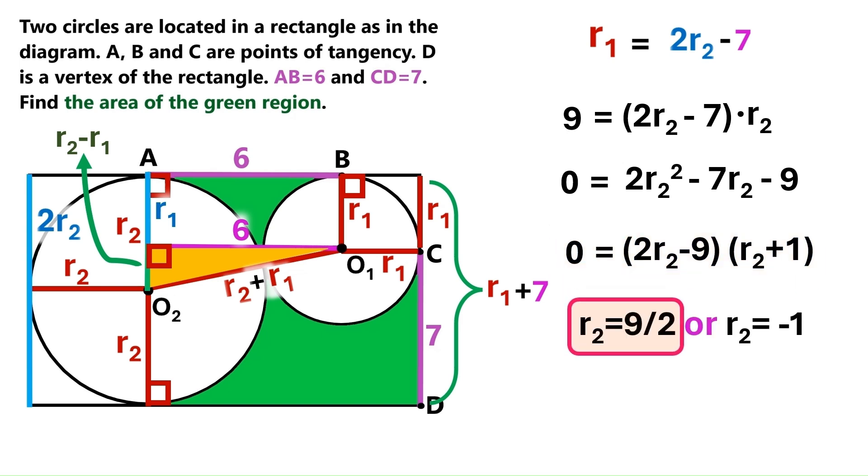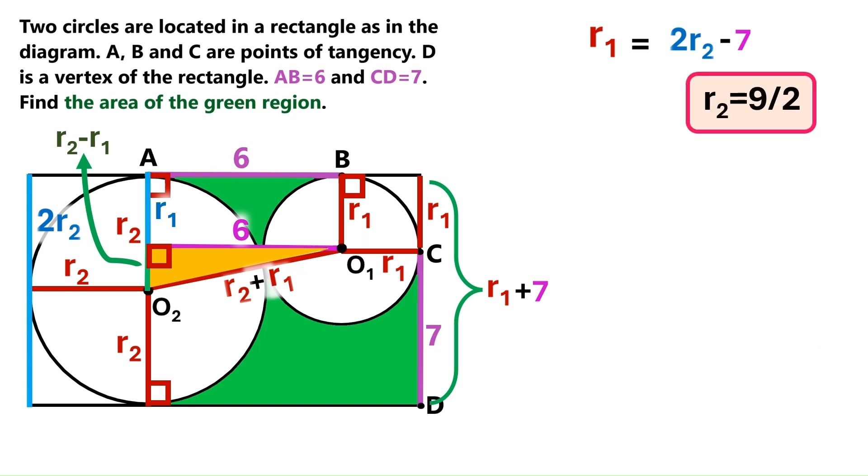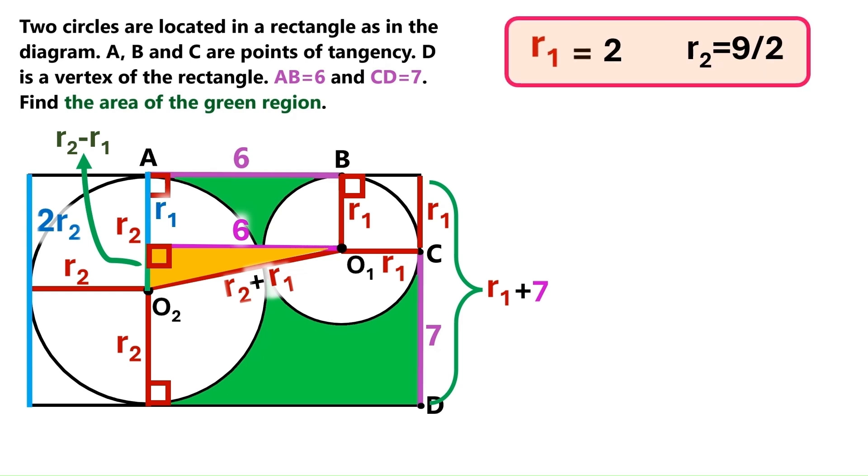Which means R2 is either 9 over 2 or minus 1. Hang on, we can't have a minus radius, so let's dump this. And we end up with R2 equals 9 over 2. We've got two R2 here, so let's substitute it with 9 over 2. We do the math, and we find R1 equals 2. Excellent, we've got two great pieces of information.